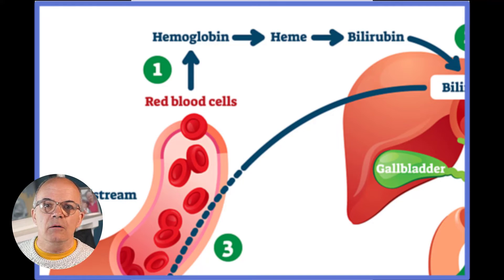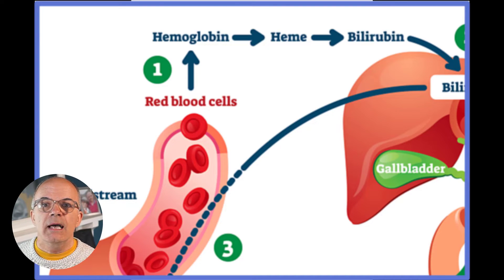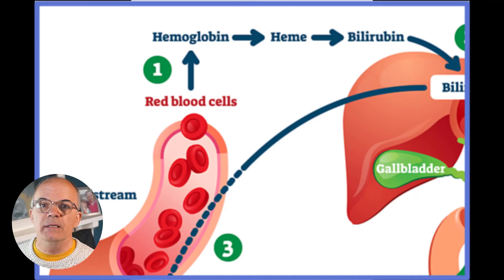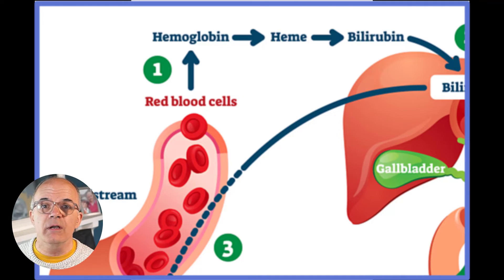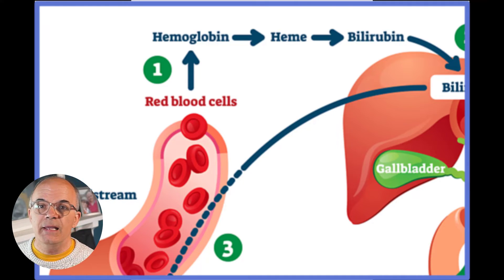Remember that unconjugated bilirubin — that is the bilirubin before the liver — has to bind with albumin to be transported around the body. There are some drugs that will compete with this binding, breaking that bond. Examples of this are salicylates, furosemide, sulfonamides, and radiographic contrast. This is more clinically important for infants rather than adults, however.